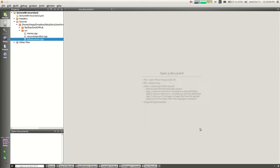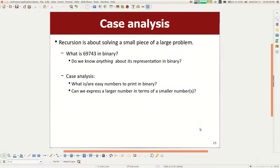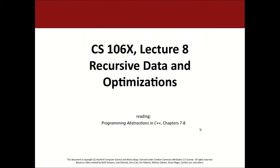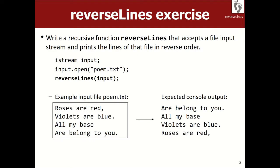I want to do another one with you. What I'm going to try to cover today is different ways that data can be recursive and some cool optimizations on recursive code. Let's process a file. Write a recursive function called reverse lines that takes an input file stream as a reference, and if these are the lines, print them back out in the opposite order — recursively, and without using collections to do the reversing.